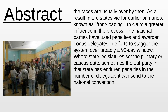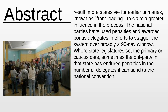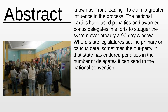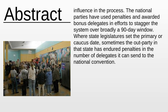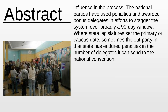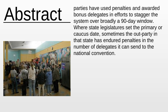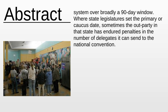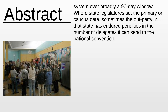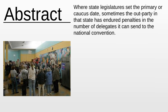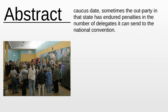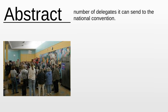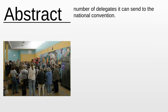As a result, more states vie for earlier primaries, known as front-loading, to claim a greater influence in the process. The national parties have used penalties and awarded bonus delegates in efforts to stagger the system over broadly a 90-day window. Where state legislatures set the primary or caucus date, sometimes the out-party in that state has endured penalties in the number of delegates it can send to the national convention.